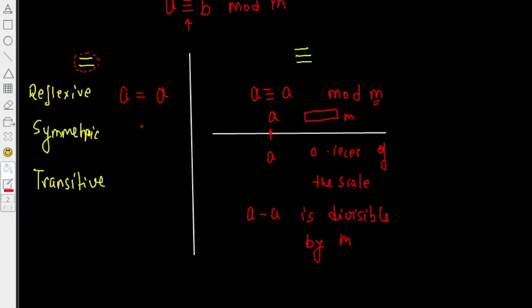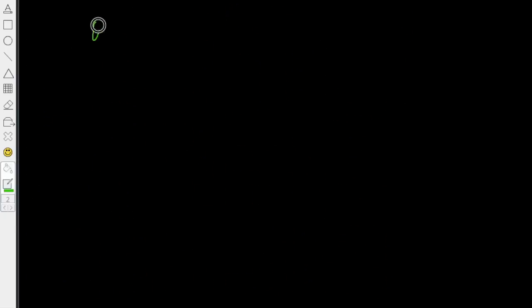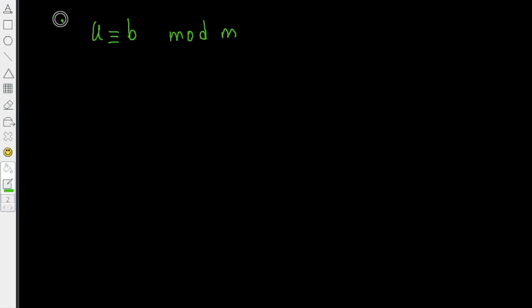Now let's look into the second property, the symmetric property. Equality relation also enjoys the symmetric property, which means that if A equals B is given, then we can say B equals A. No surprise there. But let's look at whether this is true for congruency rules or not. If we know that A is congruent to B mod M, then does that imply that B is congruent to A mod M?